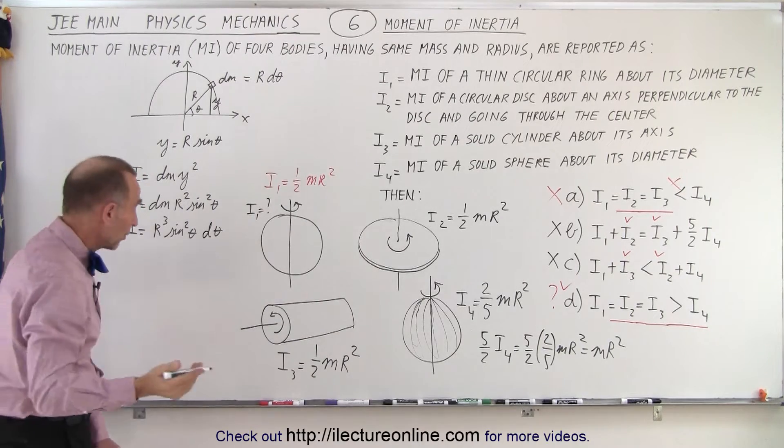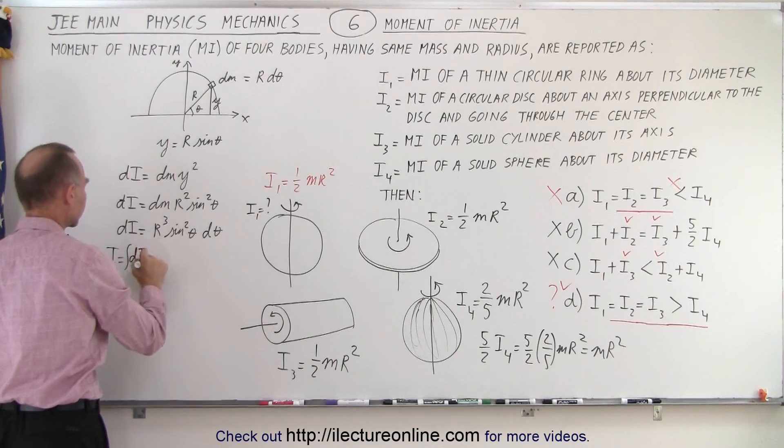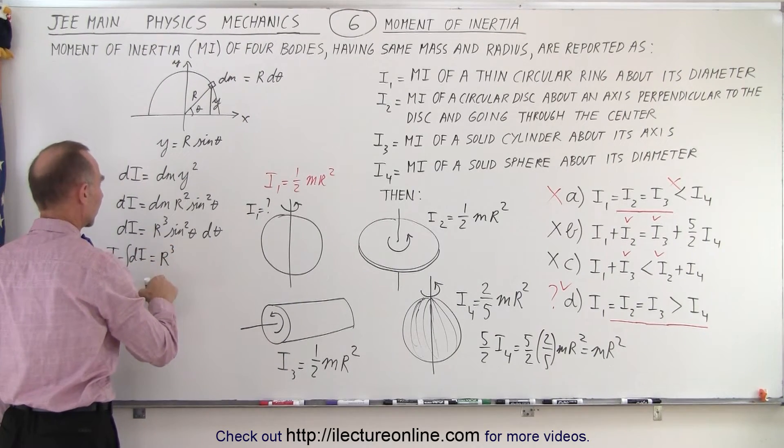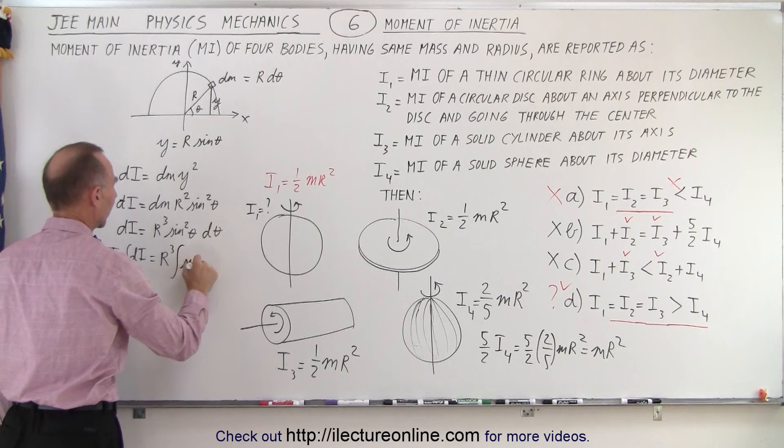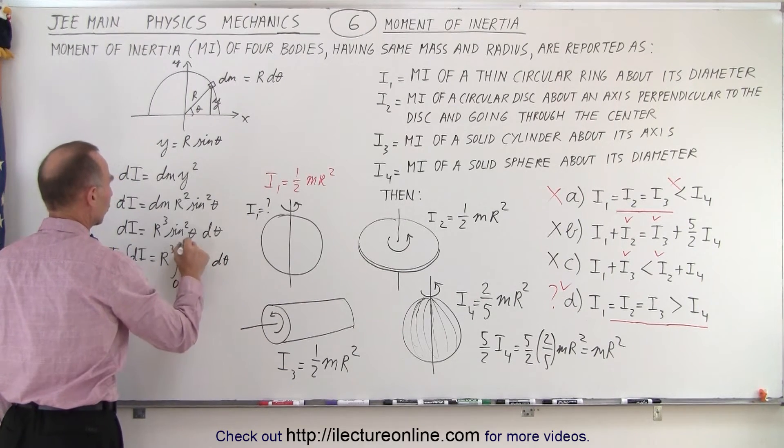And then of course, I want to find i. i would be the integral of di, which is equal to r cubed, because that's a constant, times the integral of sine square of theta d theta. And I would integrate from zero to pi.